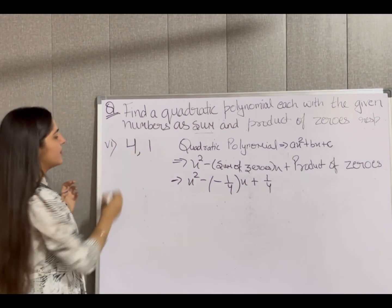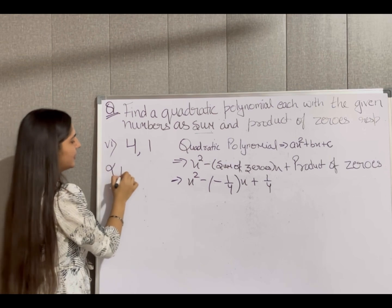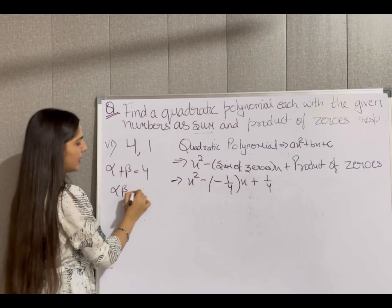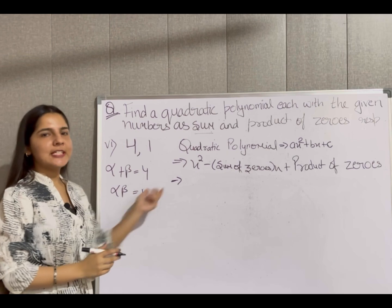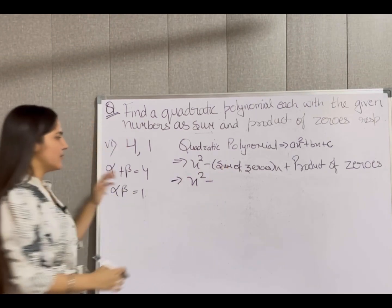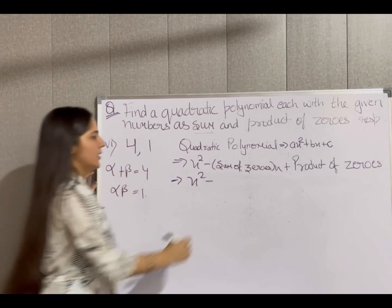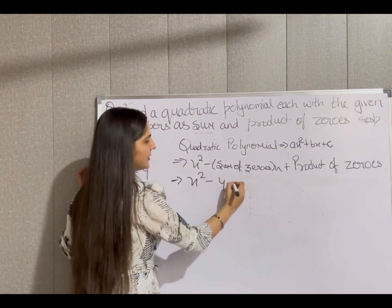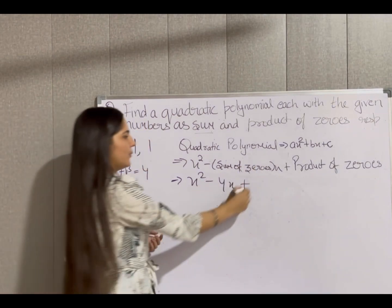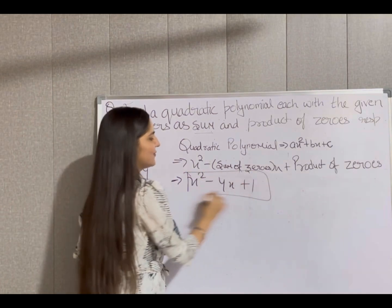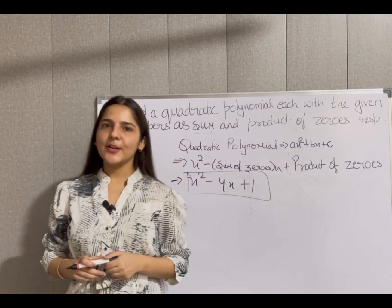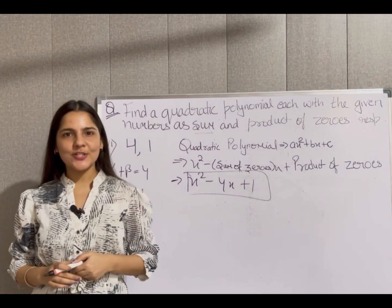For the sixth part: sum of zeros is 4 and product of zeros is 1. Putting into the formula: x² - 4x + 1. So the required quadratic polynomial is x² - 4x + 1. This completes the question. Thanks for watching.